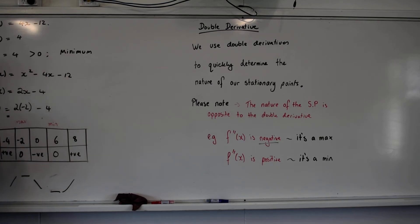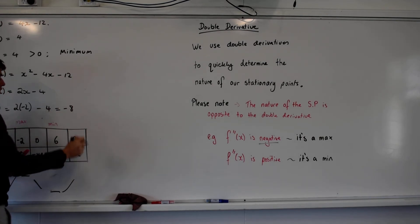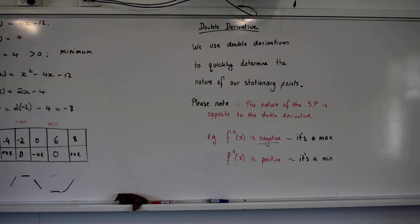2 times negative 2 is negative 4. Which is negative. And minus 4 is negative 8, sorry. So what does that tell us about negative 2 that it is negative 8? Maximum.